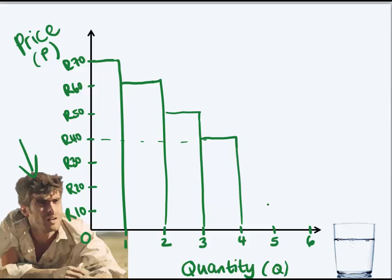Over there 30 Rand. Fifth glass, now he's almost had enough, he says 'I'll pay 30 for the fifth glass of water.' Sixth glass of water, he says 'I'll pay 20 for the sixth glass of water.'